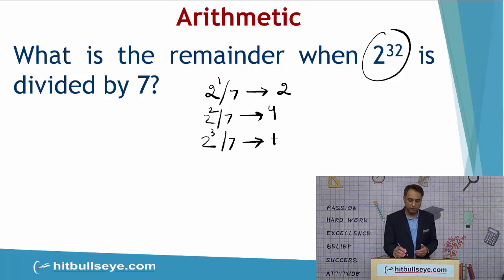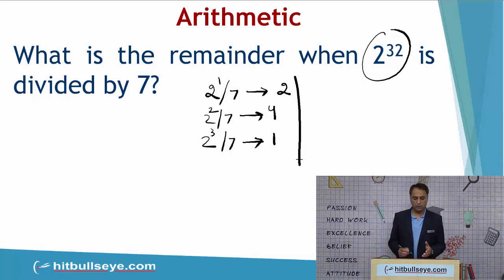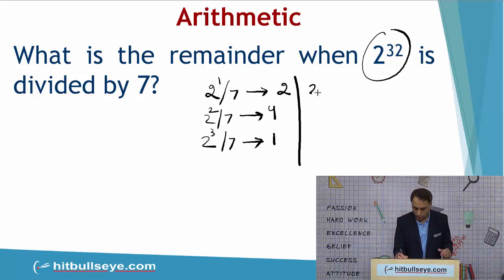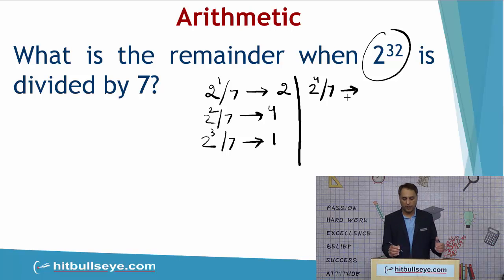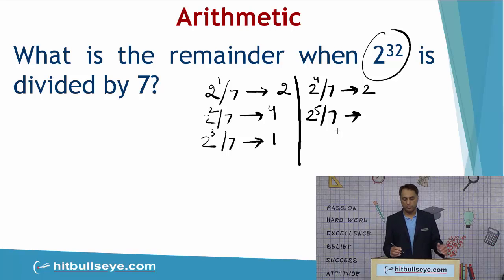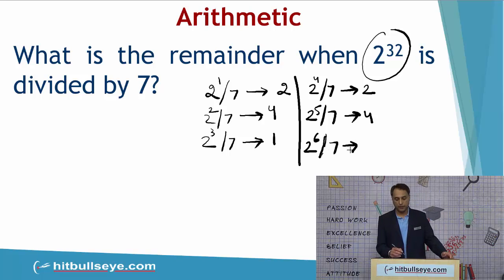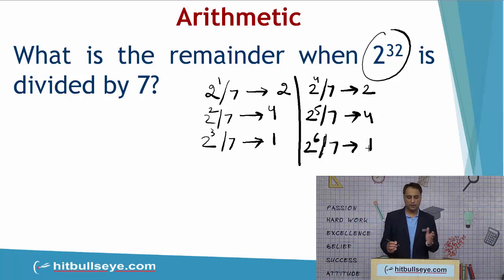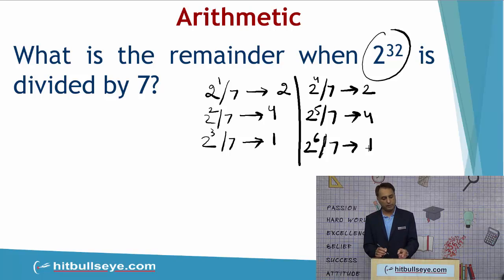Once you reach that level, the next power — 2 to the power 4 divided by 7 — gives 16 divided by 7, and the remainder is 2 again. Then 2 to the power 5 divided by 7 gives remainder 4, and 2 to the power 6 divided by 7 gives remainder 1. When you reach the next power, 2 to the power 7 divided by 7, the remainder is again 2.